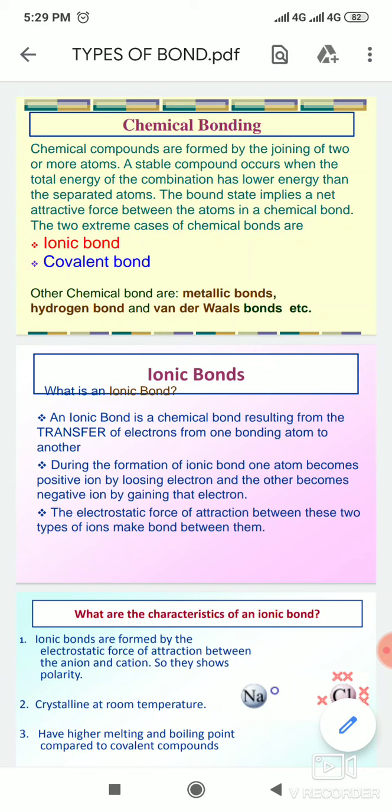What is chemical bonding? Chemical compounds are formed by the joining of two or more atoms. A stable compound occurs when the total energy of the combination has lower energy than the separated atoms. The two extreme cases of chemical bonds are ionic bonds and covalent bonds.